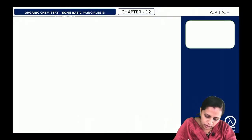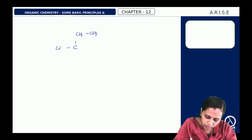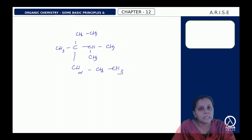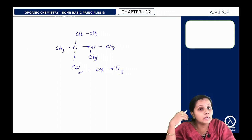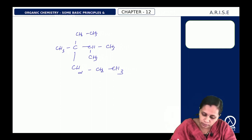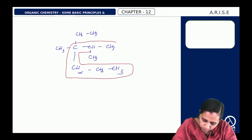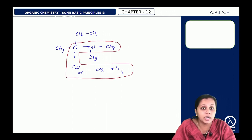Let us consider the structure: C, CH2, CH3, CH3, CH3, CH3, CH3, then CH2, CH2, CH3. The first rule is to select the longest carbon chain. If there are more than one longest carbon chain, select the one with more number of branches. The longest carbon chain selected will be the one containing more number of branches.